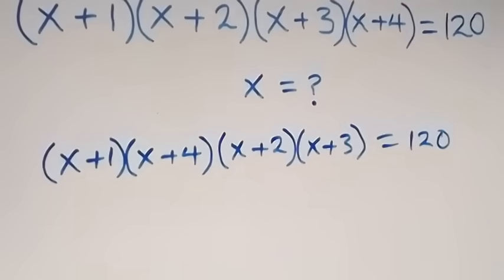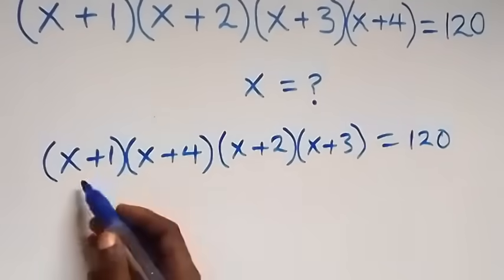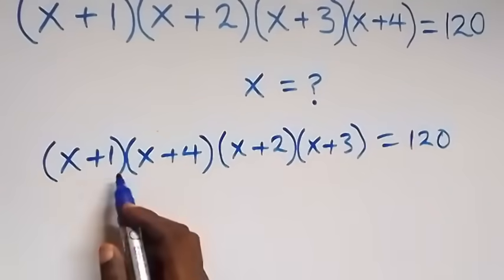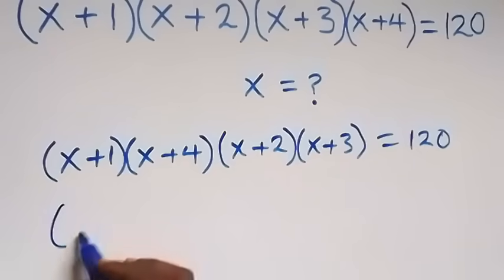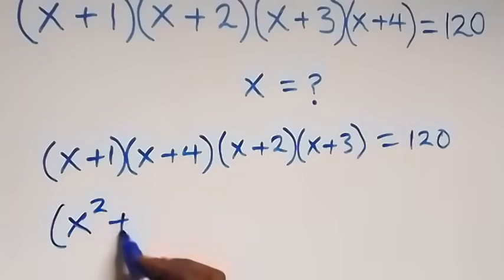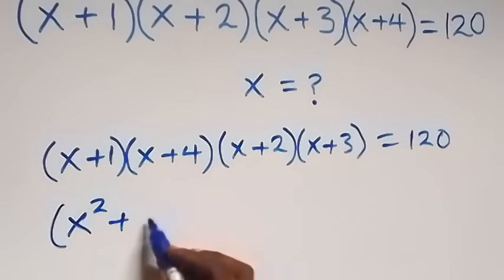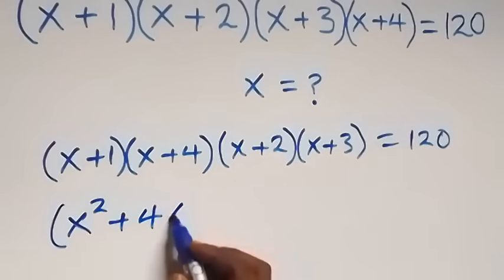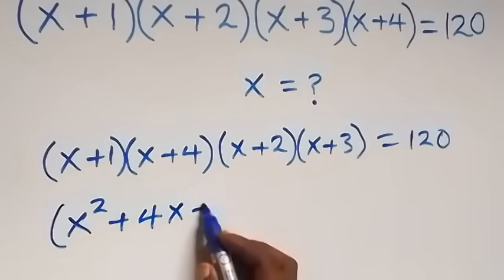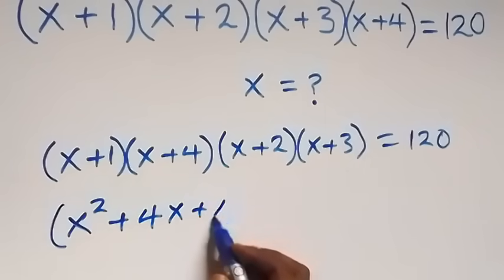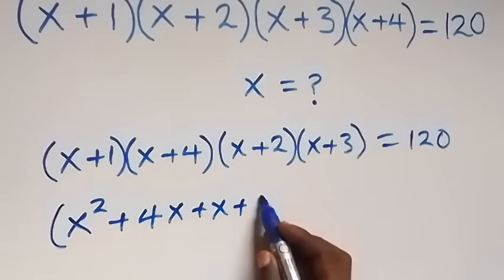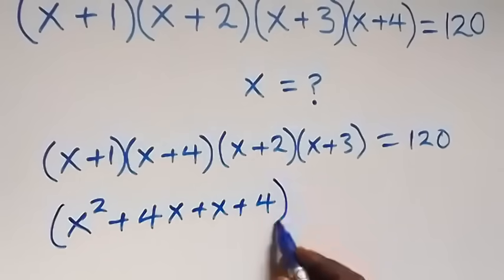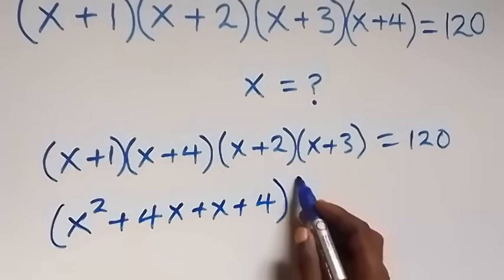From here, these two brackets, let's use them to expand. x times x gives x squared, then plus x times 4 gives 4x, then 1 times x gives plus x, then plus 1 times 4 gives 4. Close brackets.